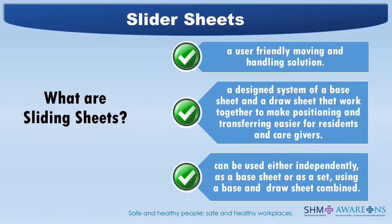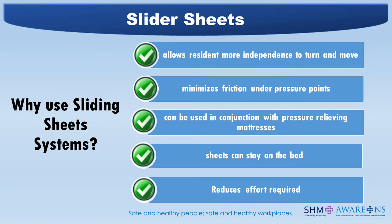Sliding sheets are a user-friendly moving and handling solution. They are a design system of a base sheet and a draw sheet that work together to make positioning and transferring easier for residents and caregivers. They can be used independently as a base sheet or as a set using a base and draw sheet combined. This system allows residents more independence to turn and move themselves in bed. Smooth sheets can minimize friction under pressure points, reducing pressure sores and shearing damage to the skin. They can be used in conjunction with pressure-relieving mattresses without affecting the pressure qualities of the mattress, and sheets can stay on the bed, enhancing comfort for the user and reducing the amount of handling required to reposition, transfer, or turn.